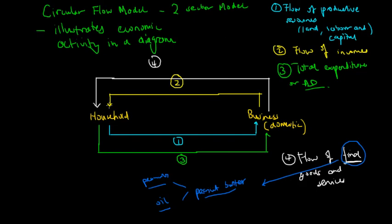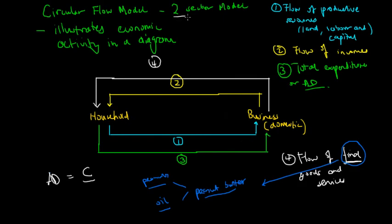In this closed two sector economy, aggregate demand equals C. There is no investment expenditure because there is no savings in the economy, and you require savings to invest. So in this two sector closed economy, the aggregate demand is only C.